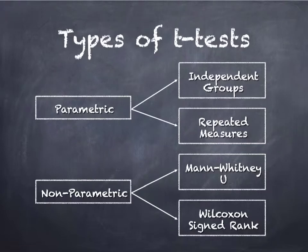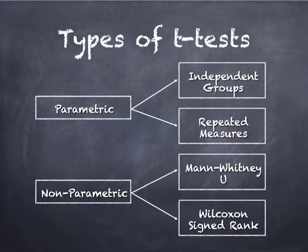There are four different types because t-tests can vary on two things. They can vary on the type of dependent variable. If the dependent variable is interval or ratio, we're going to have a parametric statistic. If the dependent variable is ordinal — such as a single Likert question — then we're going to have a non-parametric t-test.